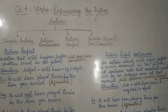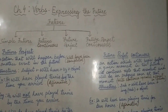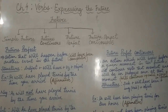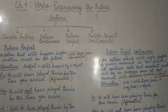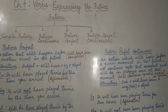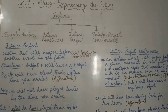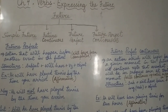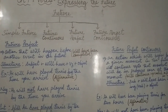Hello students of class 8. This is my second video of chapter 4, verb expressing the future. As we all know, future tense has four forms: simple future, future continuous, future perfect, and future perfect continuous. In my last video I explained simple future and future continuous. Today I will be doing future perfect.